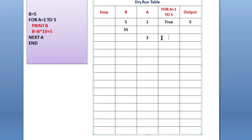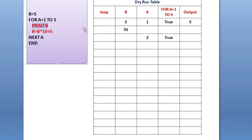Now, is 2 in the range of 1 to 5? Value of a is 2 — yes, it is in the range, so I'll write true again. This condition is true. When this condition is true, it will print the value of b. Check the latest value of b, which is 55.